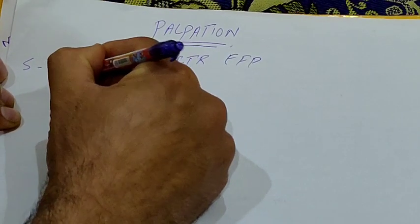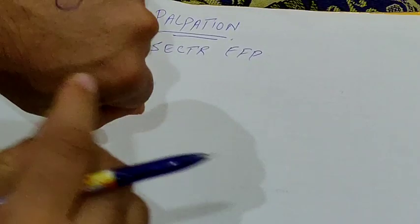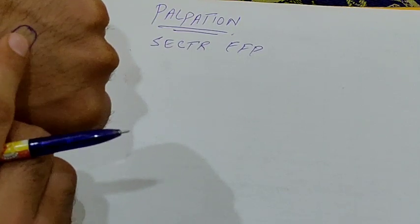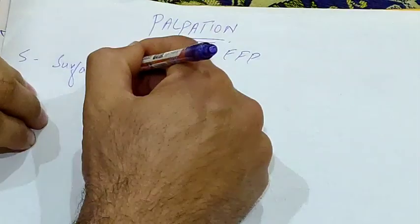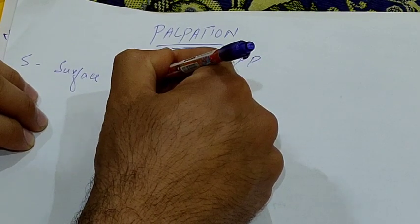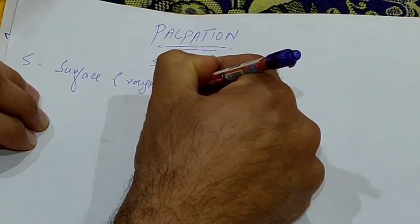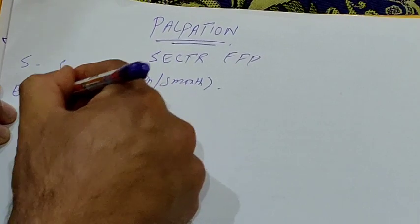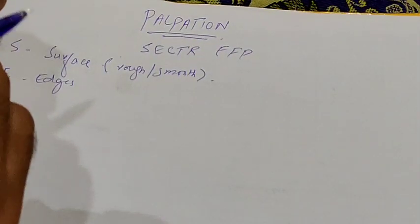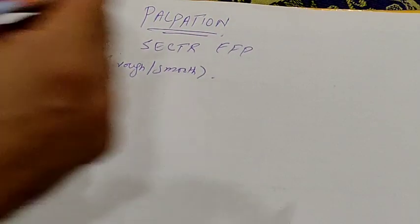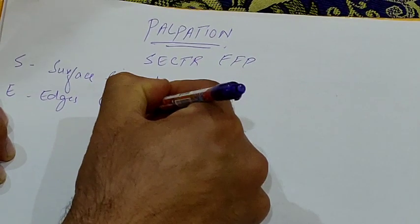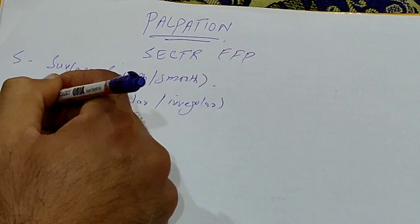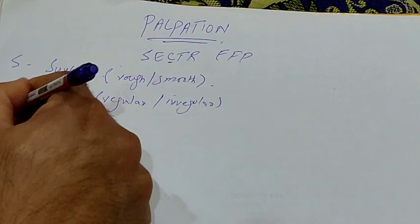S stands for surface. I have drawn a lump on my hand — consider this a lump. On palpation, check whether the surface is rough or smooth. E stands for edges — you will check the edges, either they are regular or irregular.